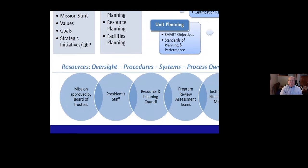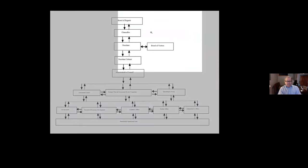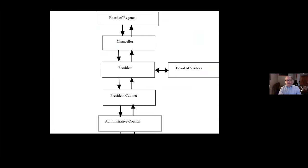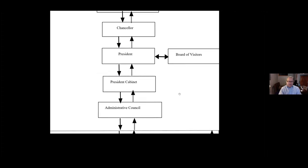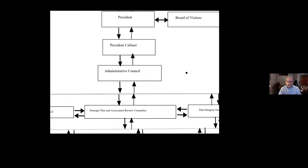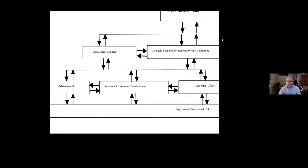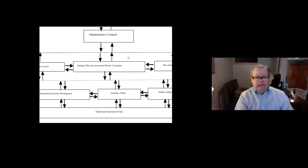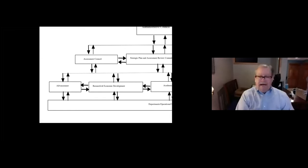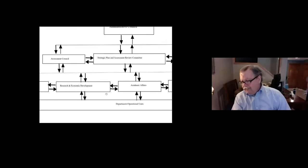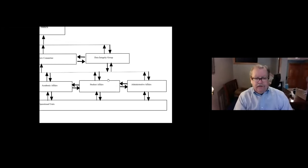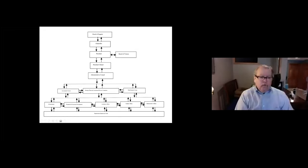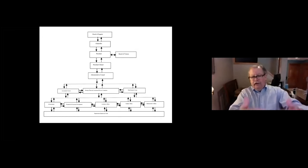The third model looks a little more convoluted, but it's not. We start at the top with the Board of Regents and work through the organizational structure—internal and external. The President's cabinet and administrative councils are involved, along with different councils for assessment, planning, and data. Then we tie together the different parts of the institution: advancement, economic development, academic affairs, student affairs, and all the units underneath. Everything aligns and is coordinated throughout the structure.